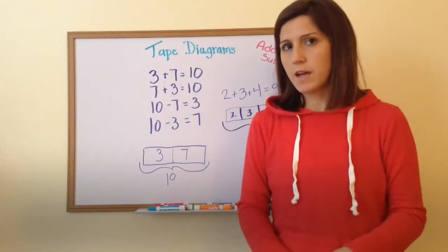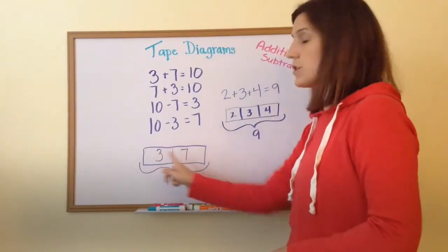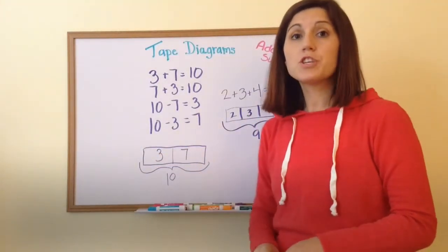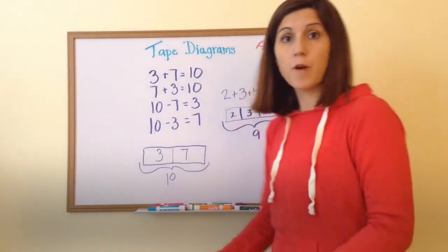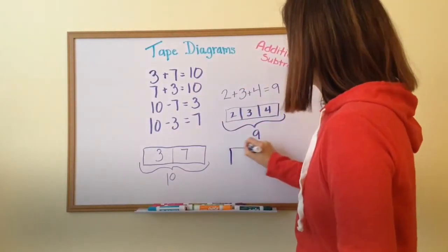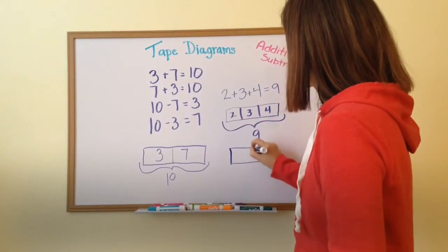Notice that your tape diagram only shows addition across the top. So you can check your work and make sure that you're correct by filling out the tape diagram and looking at the numbers.